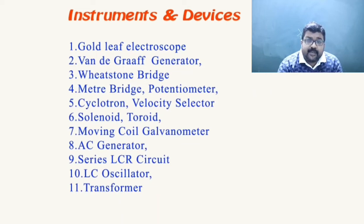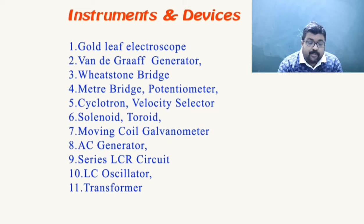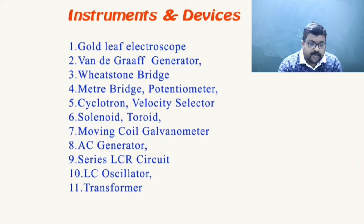Then you have the Velocity Selector and its application. Then the Solenoid and Toroid. Then the Moving Coil Galvanometer — how the galvanometer can be converted into an ammeter and how it can be converted into a voltmeter. Then the AC Generator, Series LCR Circuit, LC Oscillator, and Transformer. These are the instruments or devices you need to study.